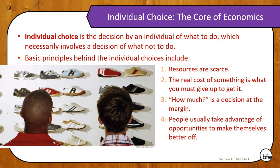Individual choice is the core of economics. Individual choice is the decision by an individual of what to do, which necessarily involves a decision of what not to do. The basic principles behind individual choice are: resources are scarce, the real cost of something is what you must give up in order to get it, how much is a decision at the margin, and people usually take advantage of opportunities to make themselves better off.